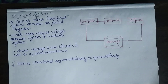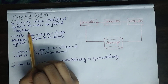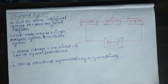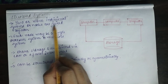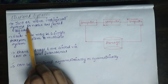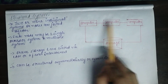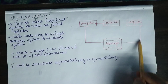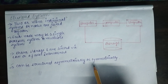Now let's look at cluster systems. In a cluster system, you have two or more individual systems or nodes joined together. Unlike multi-processor systems where you have multiple processors in one system, here you have multiple complete systems joined together. Each node can be a single processor or multi-core system, and these systems share storage space, connected via LAN or any other fast interconnect.